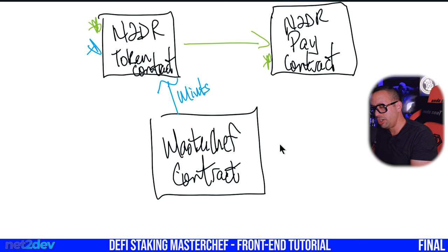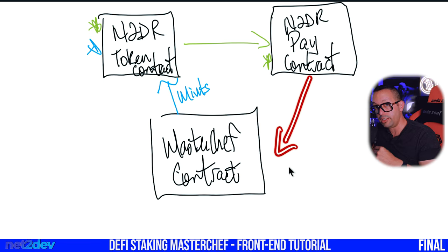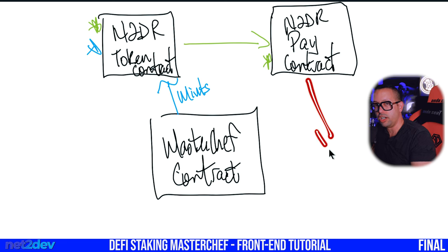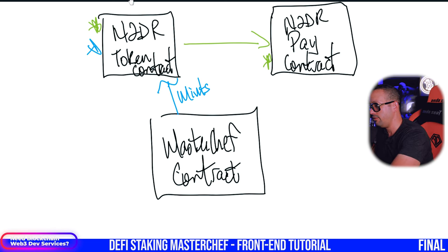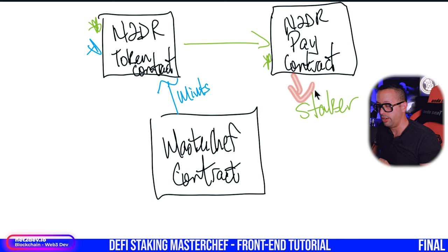The safe NTR transfer function is going to be pointing to the Pay contract, not the NTR token. We're just going to make that change. The reason we want to do that is because we don't want to hold the tokens on the same token smart contract. We should have a separate contract to hold the tokens. The NTR Pay contract is just going to send the tokens to the staker — those are the payout tokens, the reward tokens earned from staking.